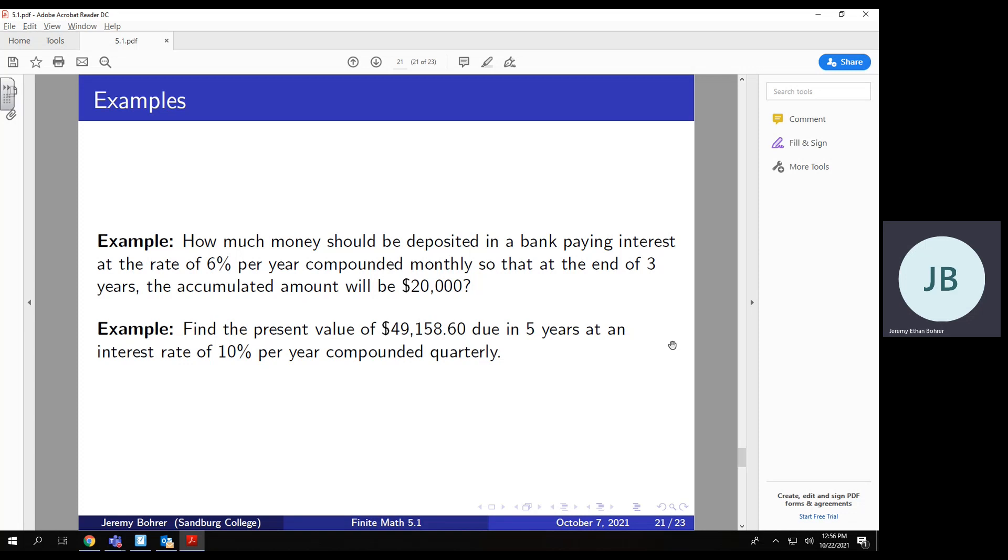First, how much money should be deposited in a bank paying interest at the rate of 6% per year, compounded monthly, so that at the end of three years, the accumulated amount will be $20,000.